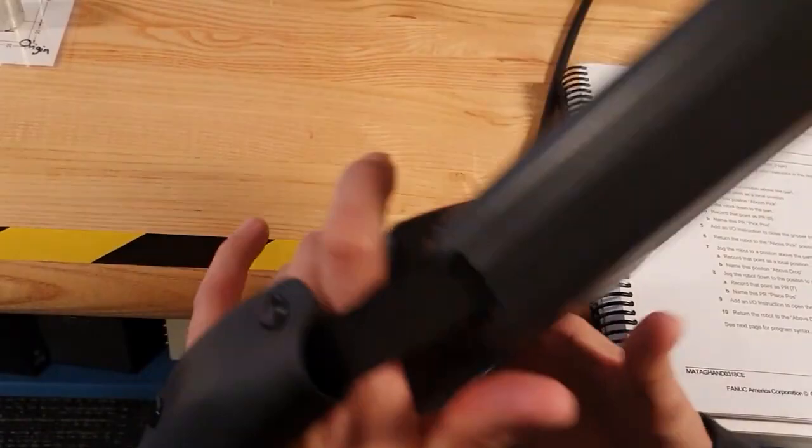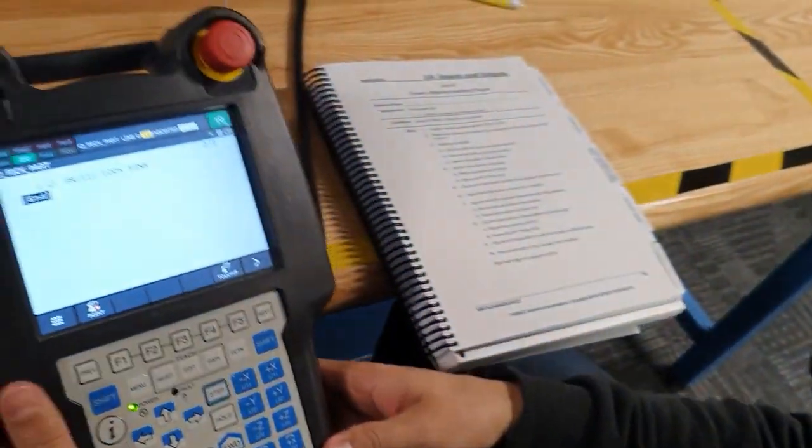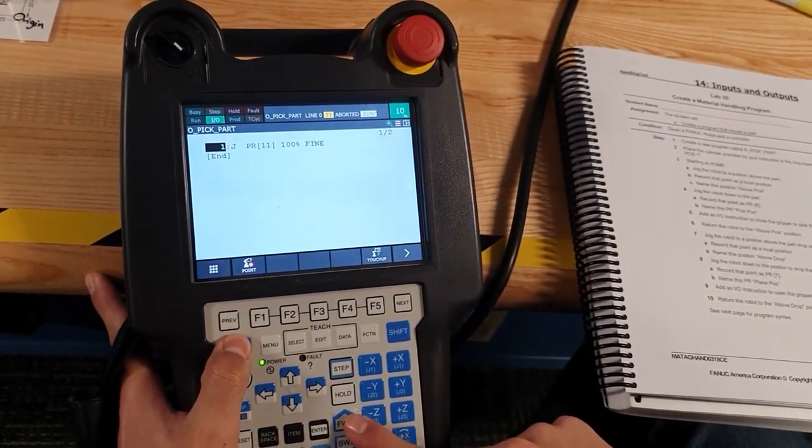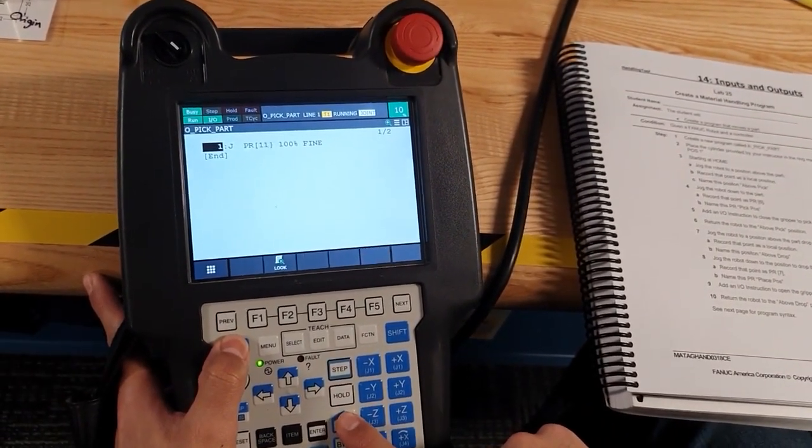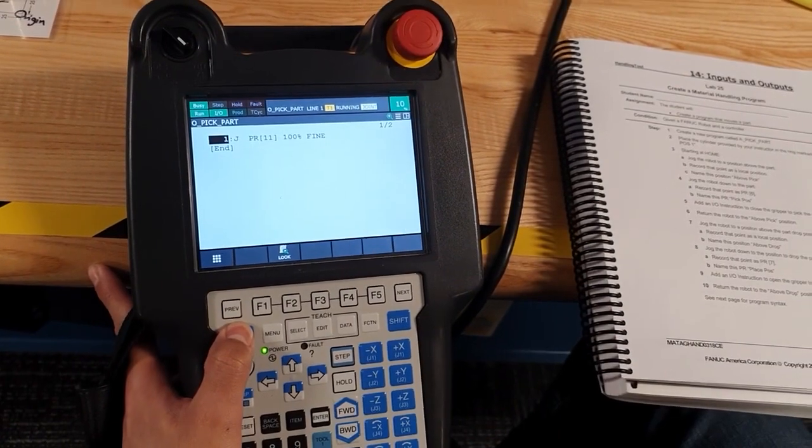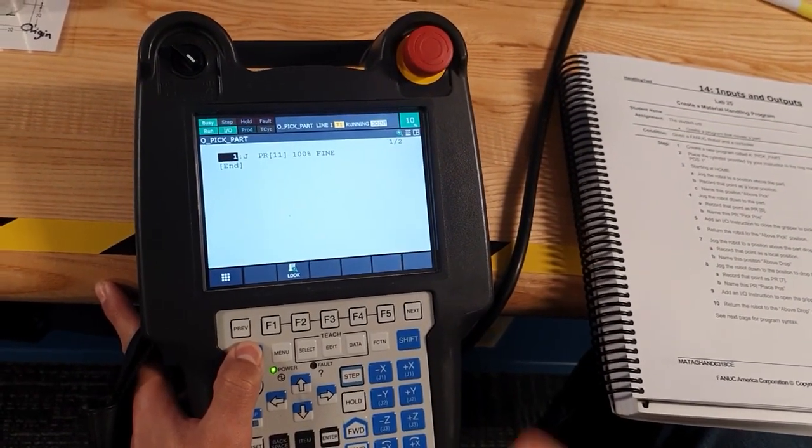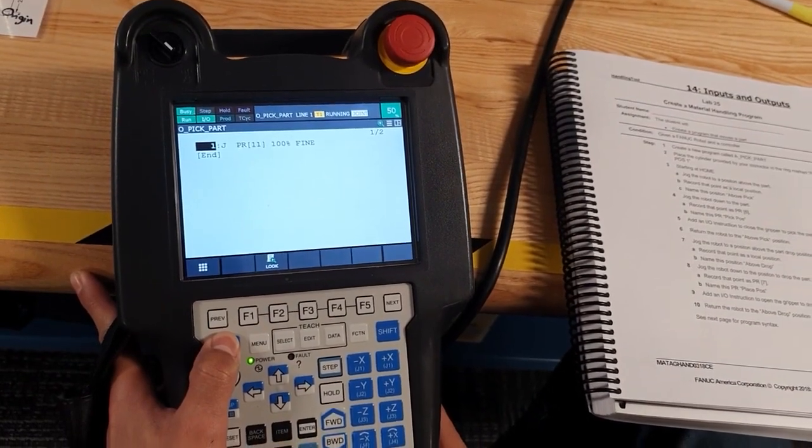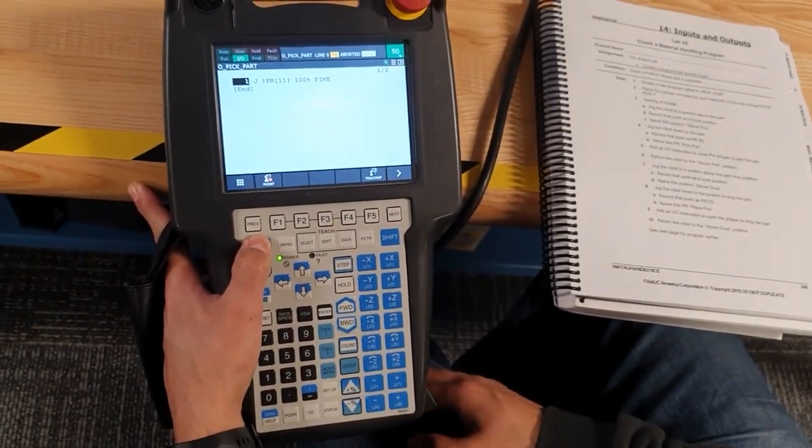And to make sure they're all of our home, press that, the middle position, shift, and fold, and the robot is moving to home. We can increment speed. Okay, now the robot is moving home.